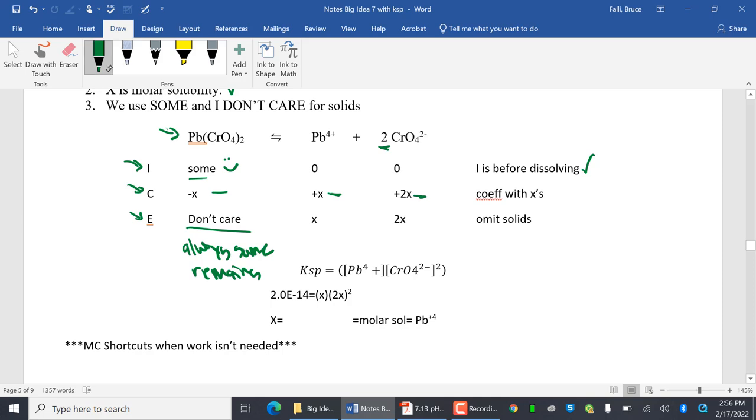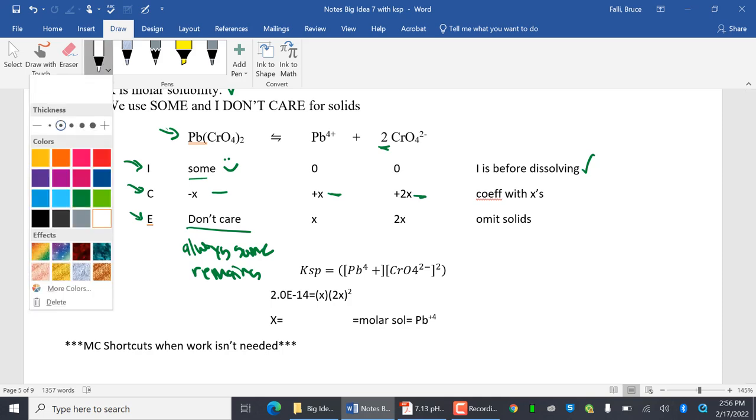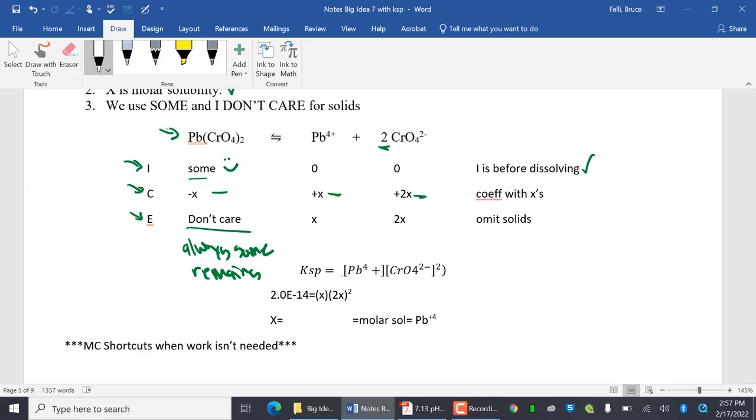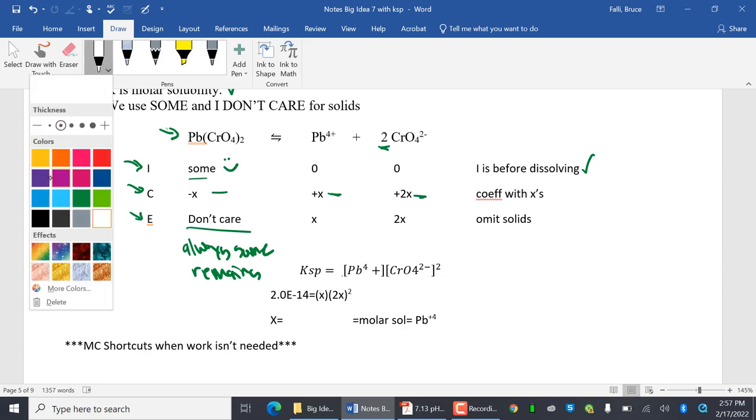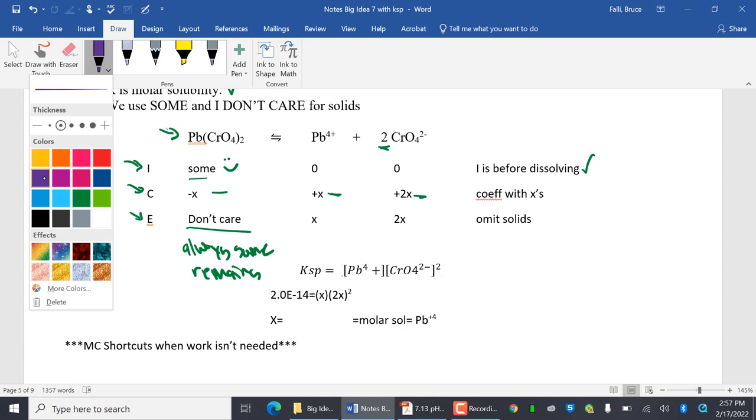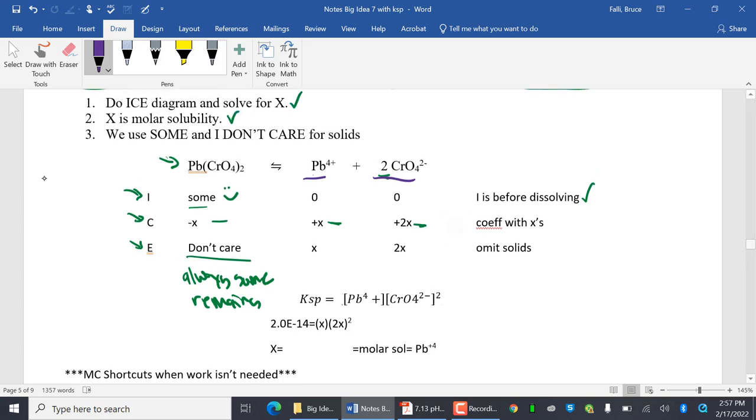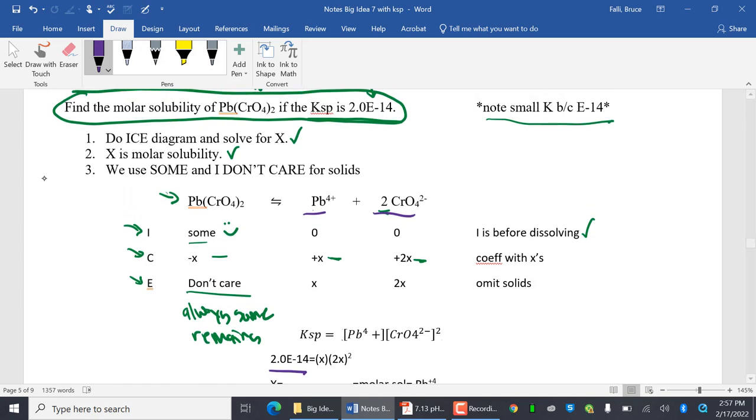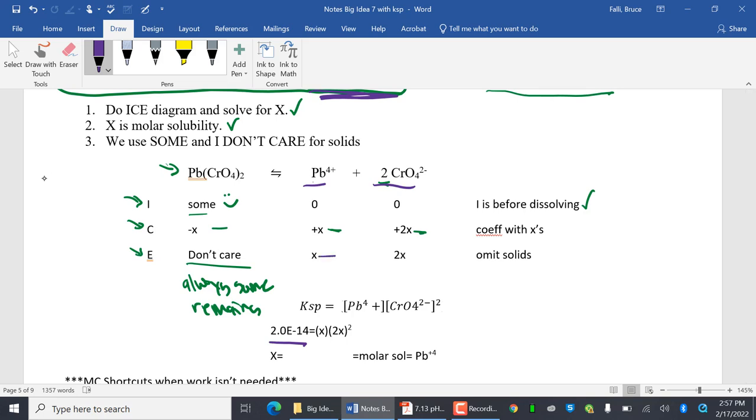We're going to write our KSP expression. I feel very bad. I had the worst time trying to get rid of these parentheses. So there we go. I got rid of them now. So KSP is products over reactants. Now notice it's a solid, so it's just your products. So it told us before this number, 2E14, was given 2E14. And then my reactants lead and chromate.